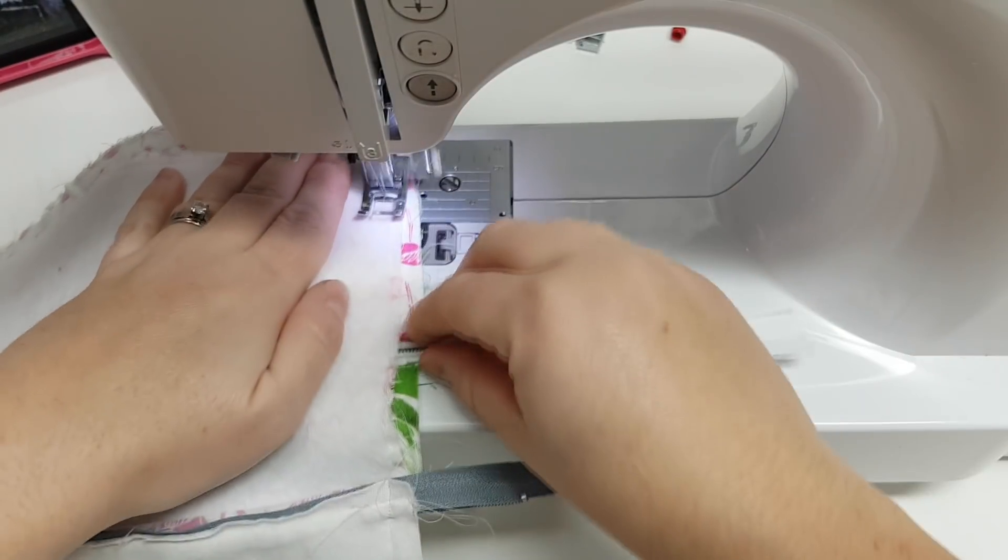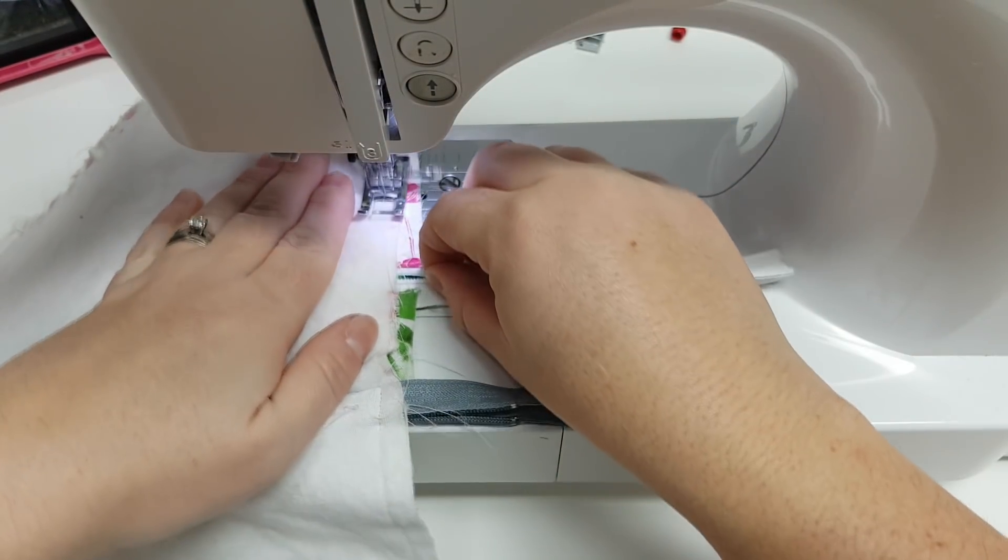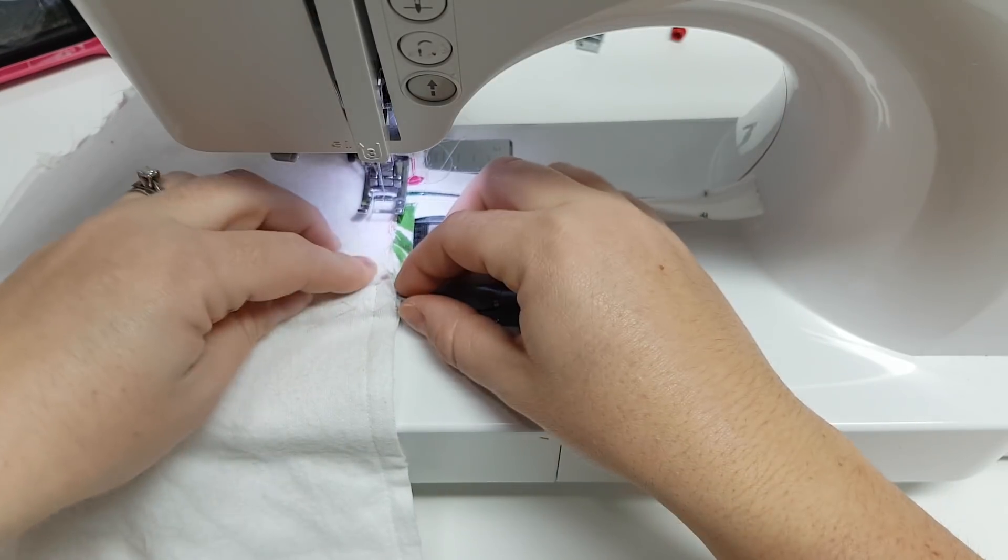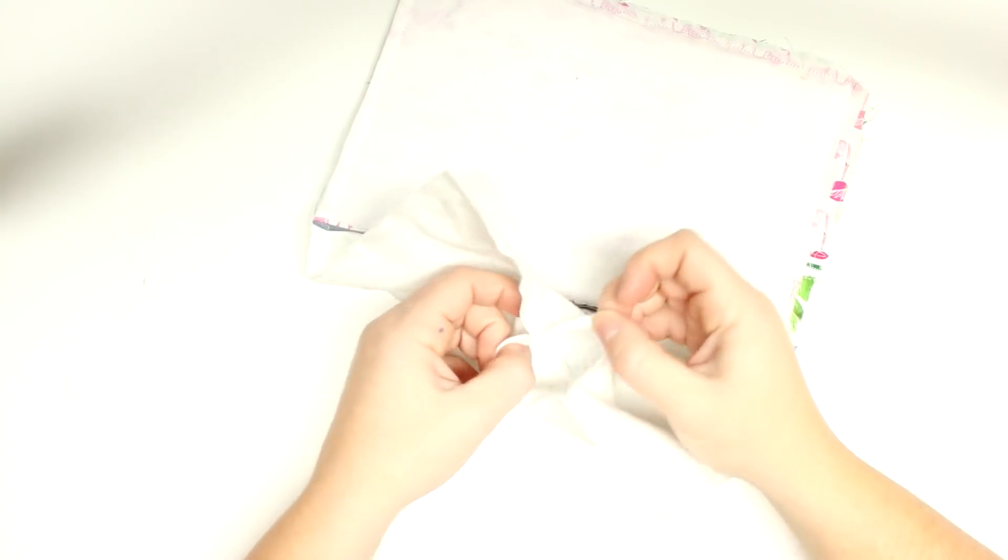And then when you get around to this side, you're going to make sure you have your zipper open and then just pinch the zipper so that you can make sure it's nice and close together when you sew over top of it, the teeth that is. And then we will open the zipper inside.